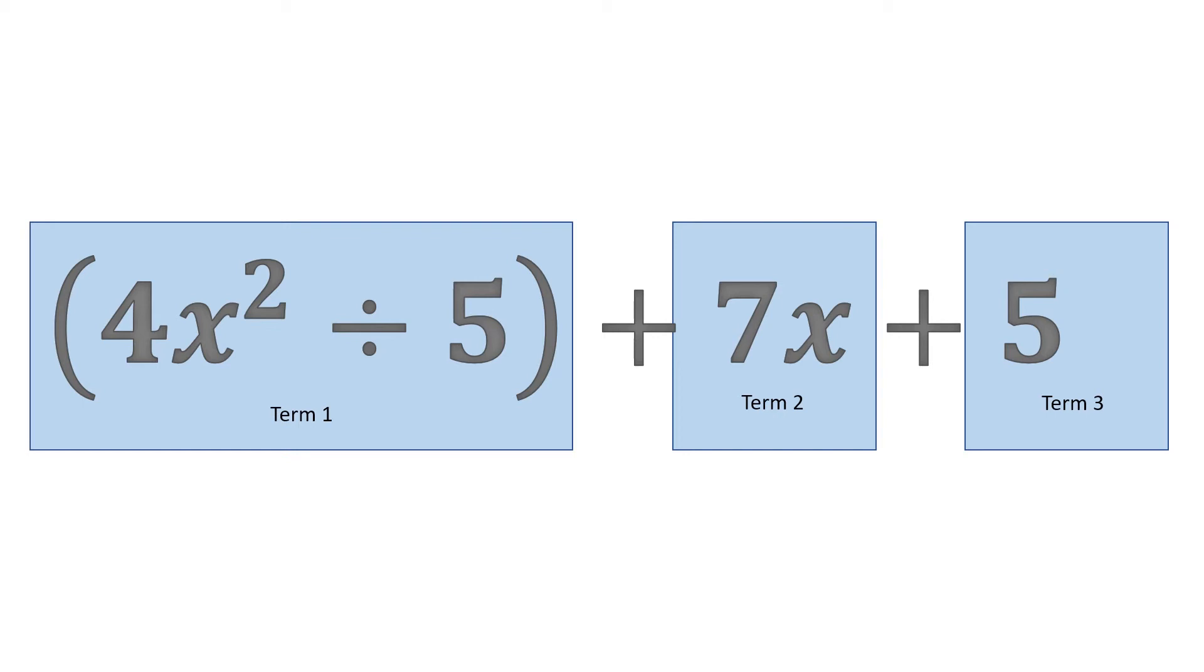Why is this first term, this whole term seen as one term? Very easy. It's because everything is put in brackets. The brackets immediately makes it one term. However, even if there wasn't a bracket, the division sign between 4x squared and 5 makes it one whole term as well.